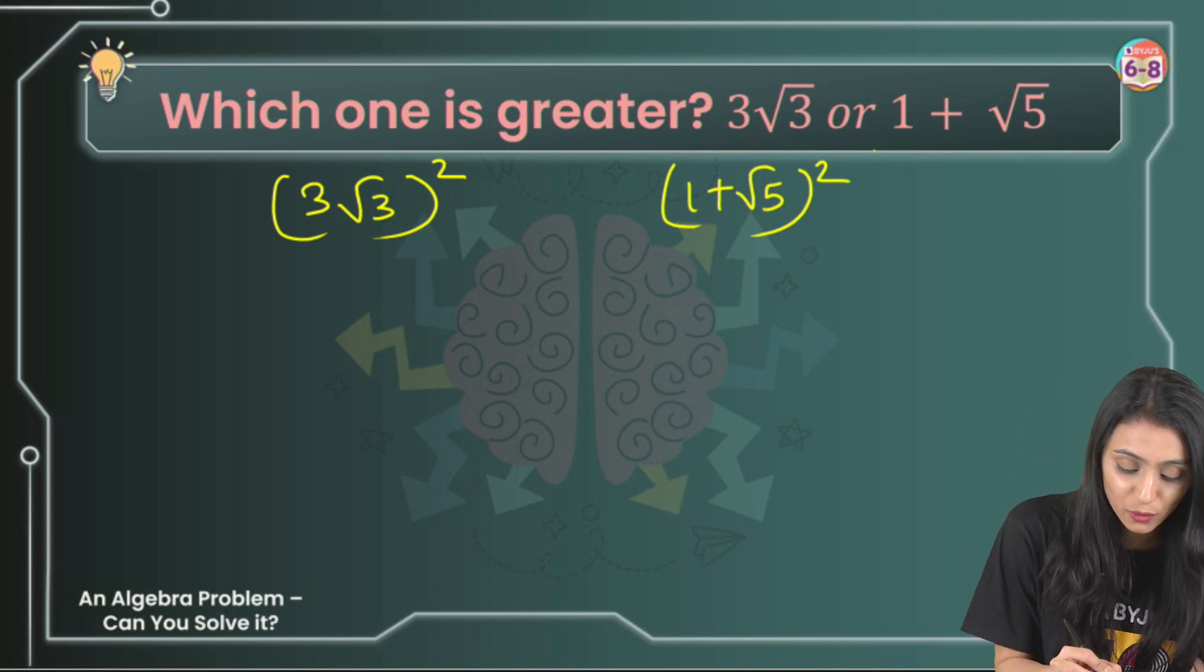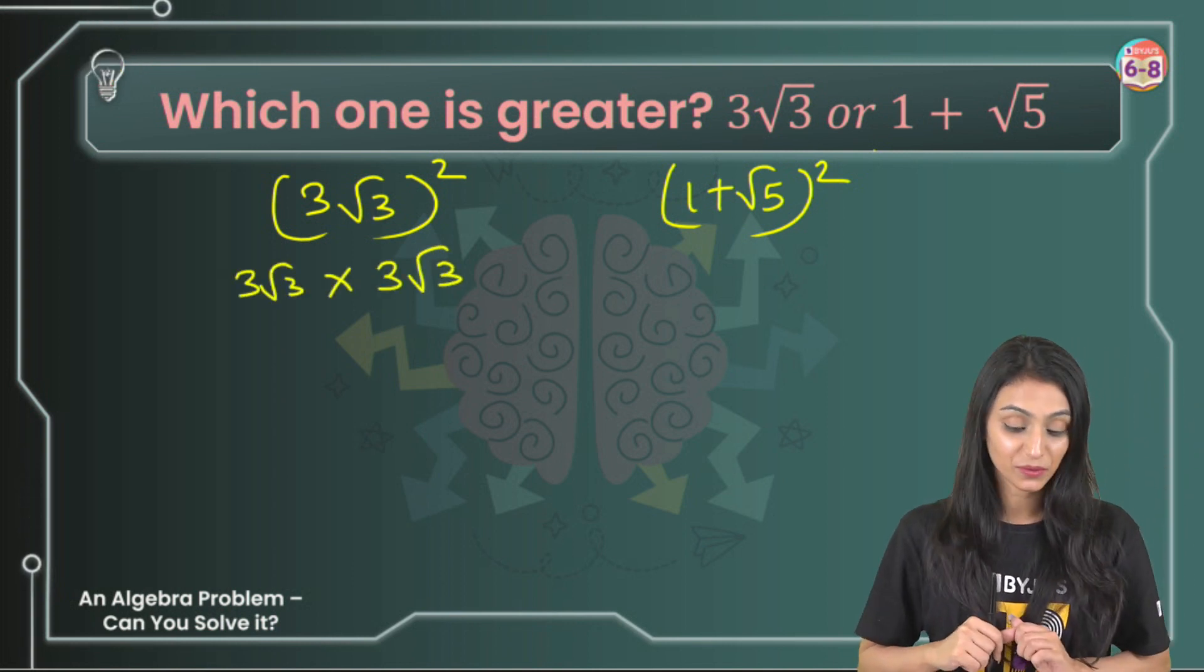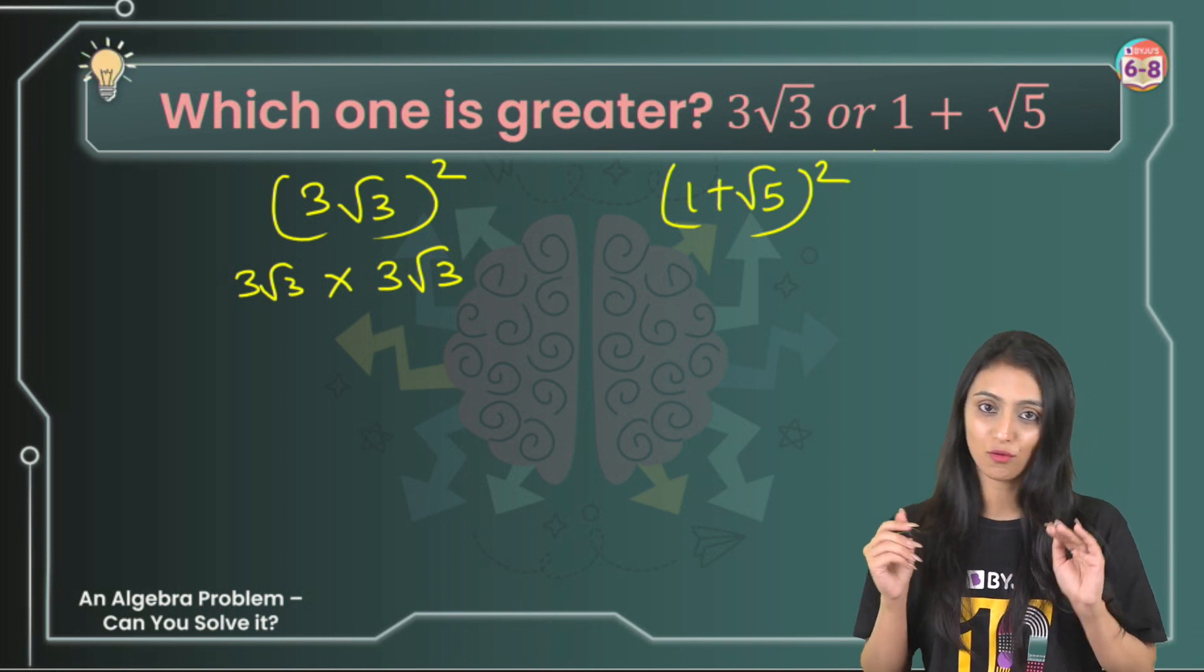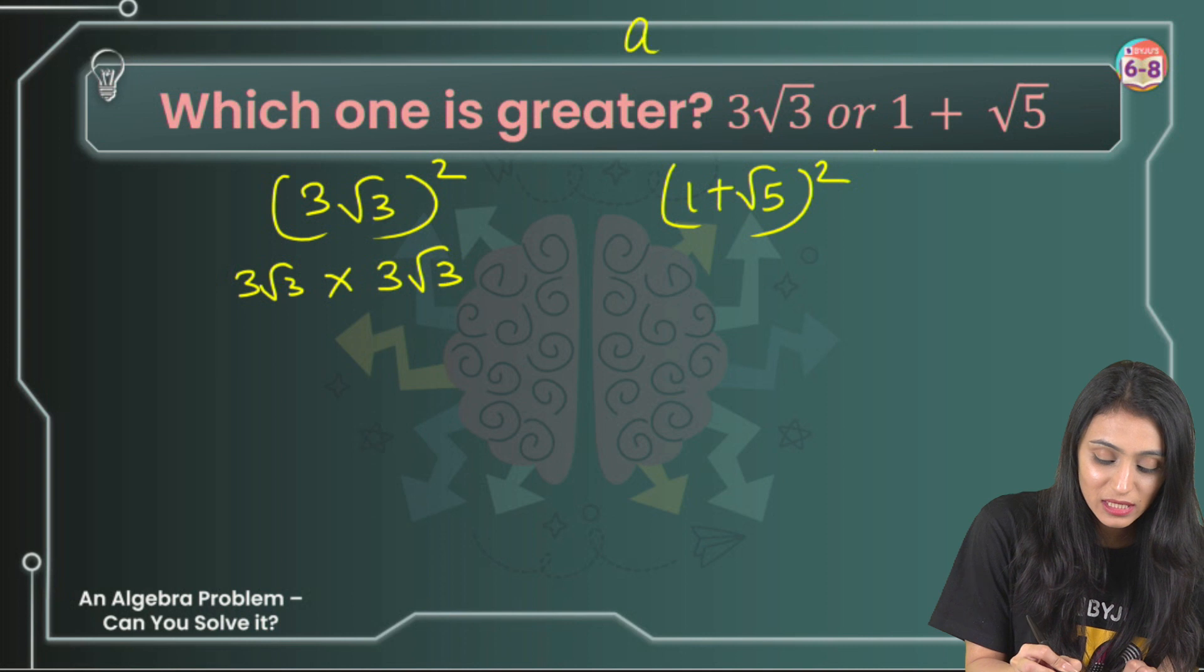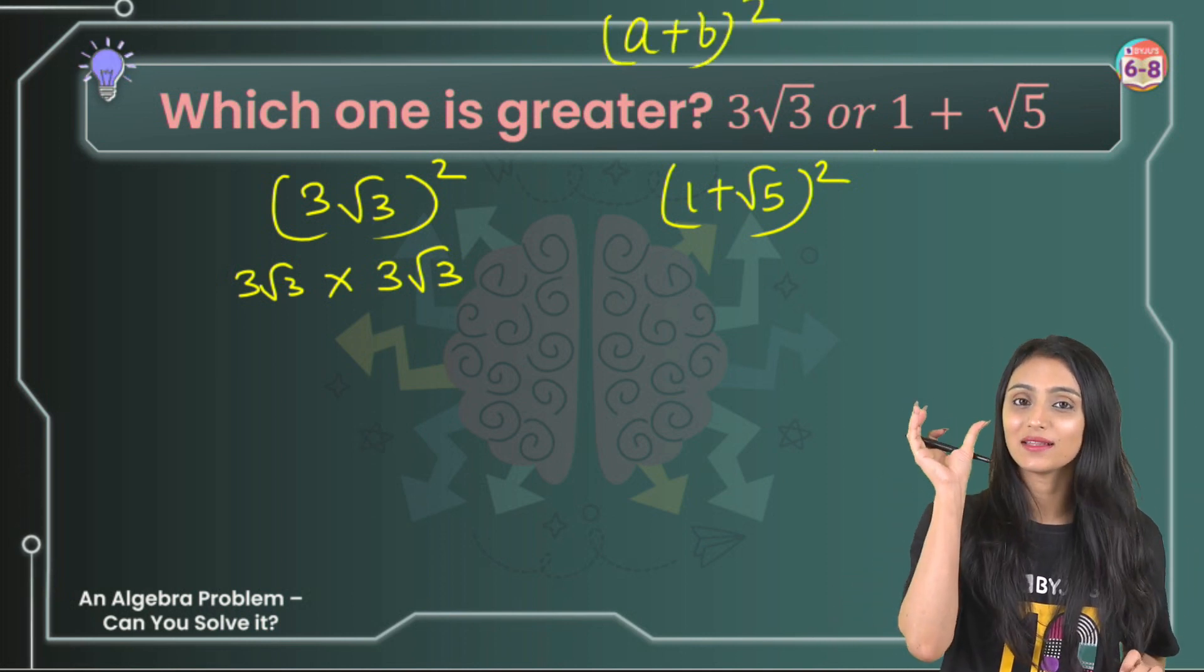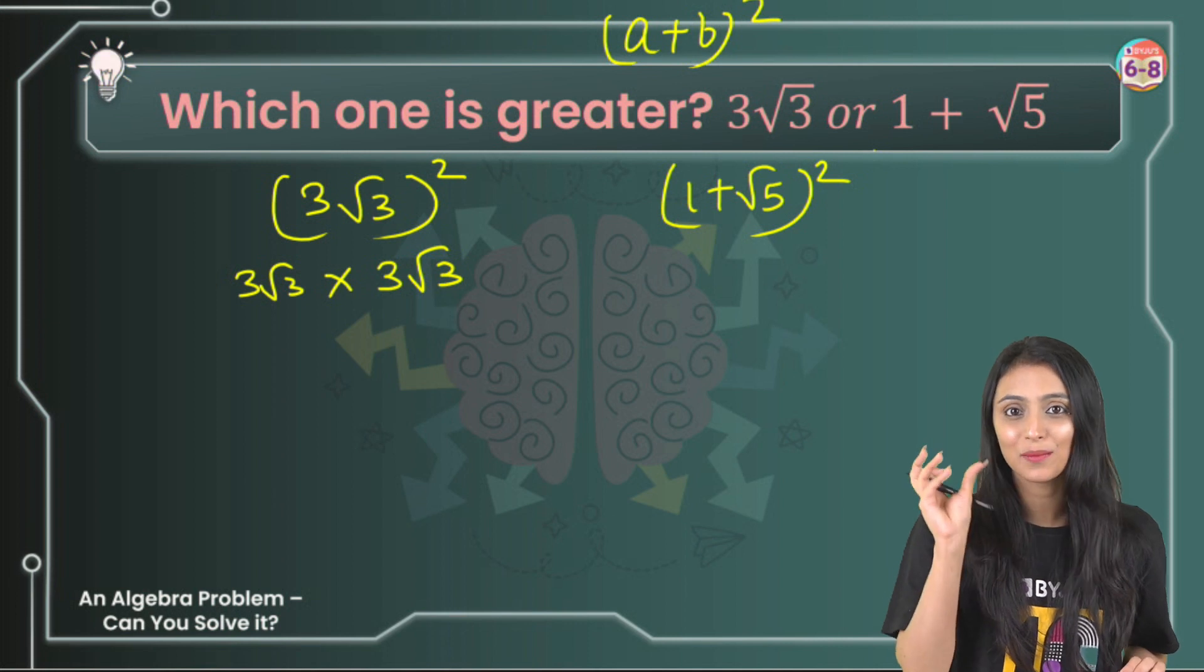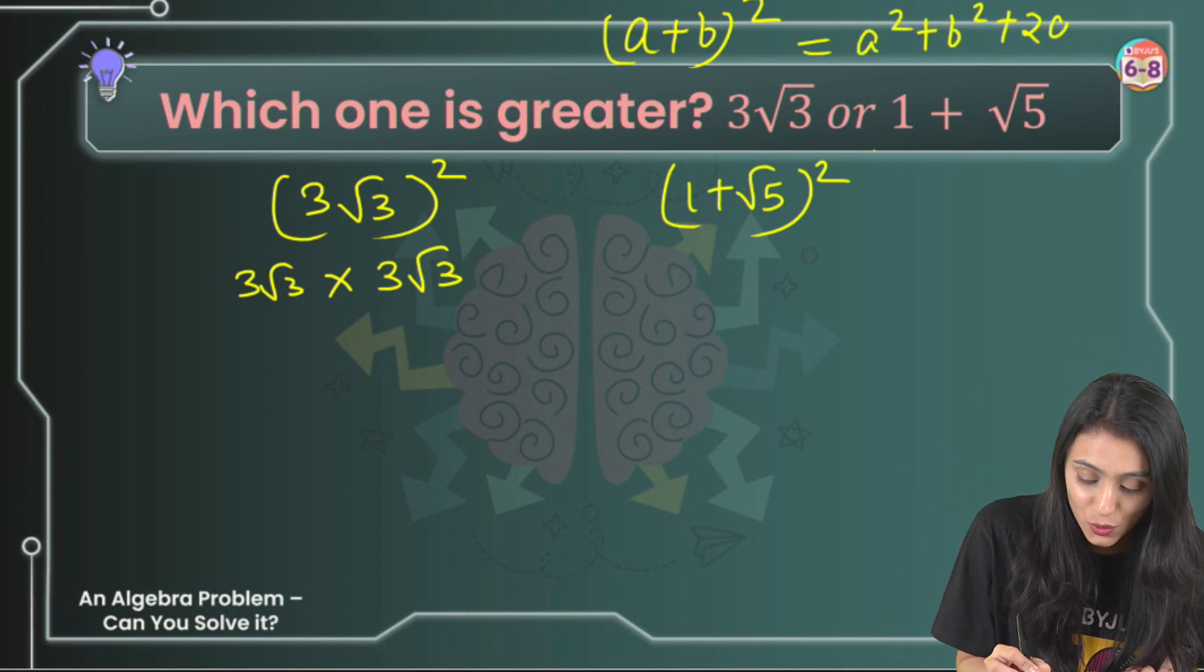3√3 whole square is 3√3 times 3√3. And 1+√5 whole square. I have seen a lot many times students making this mistake - they would simply say a+b whole square is a²+b². Please do not forget that we have to use the algebraic identity to solve this. That's going to be a²+b²+2ab.